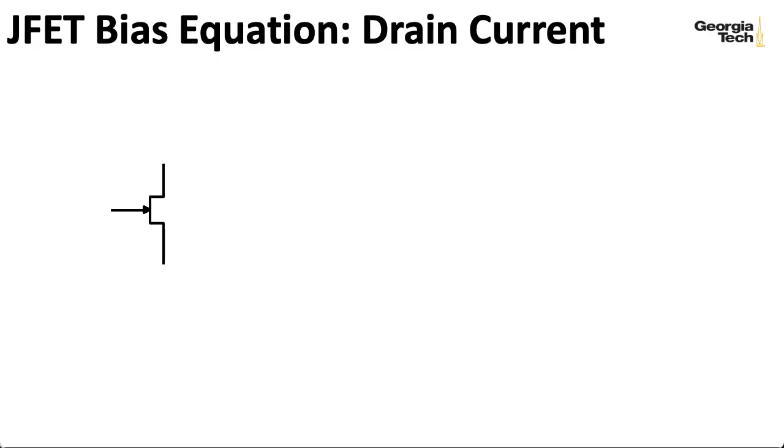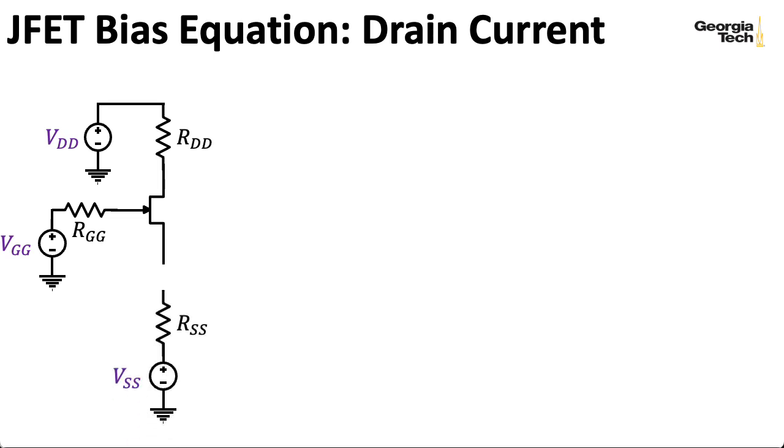I'm going to imagine that we could characterize a particular DC bias circuit via a Thevenin equivalent seen looking out of the gate, a Thevenin equivalent seen looking out of the drain, and a Thevenin equivalent seen looking out of the source. Remember that ideal JFETs are symmetric, and what's the drain and what's the source is determined by the voltages that are hooked to it. So we'll assume that VDD is higher than VSS.